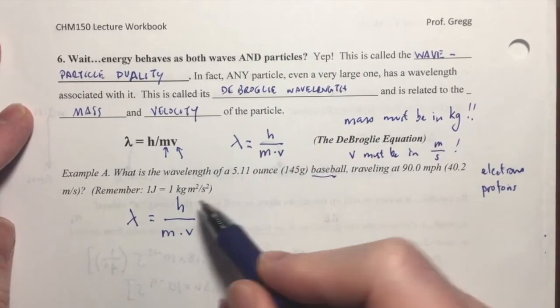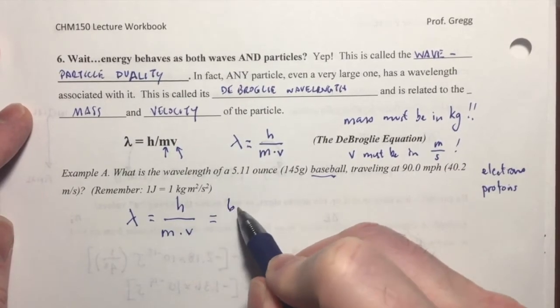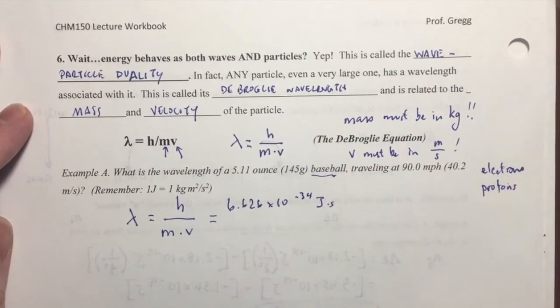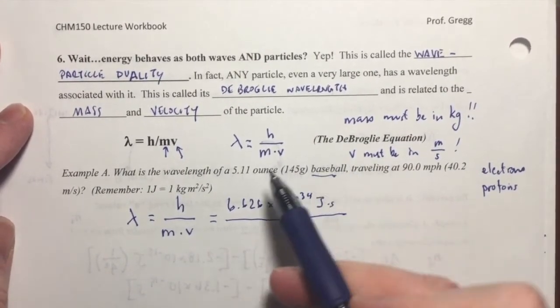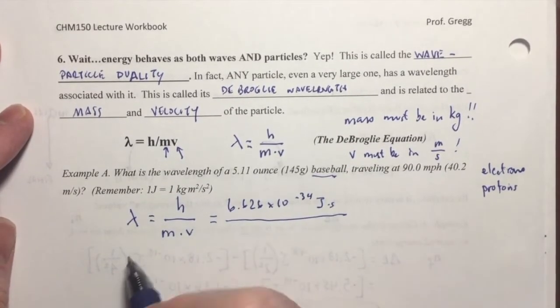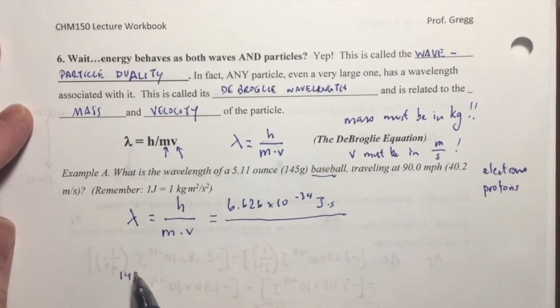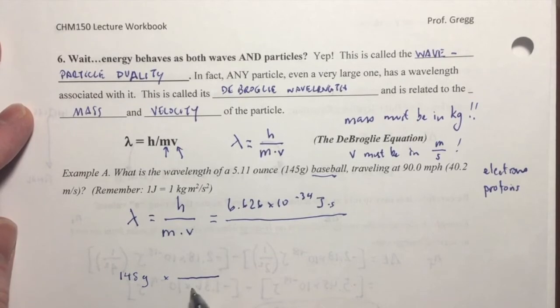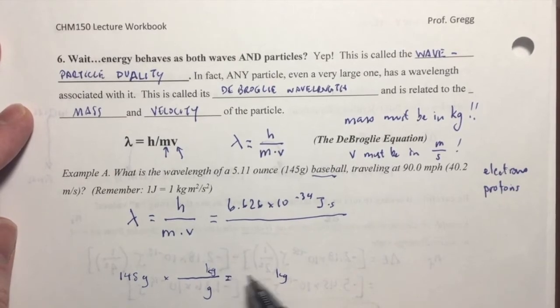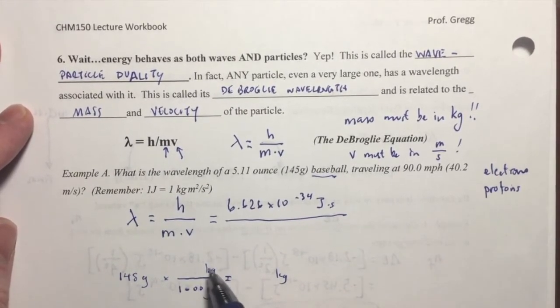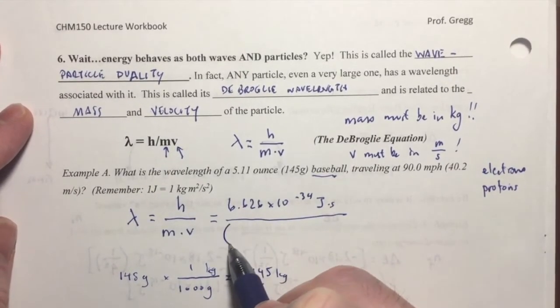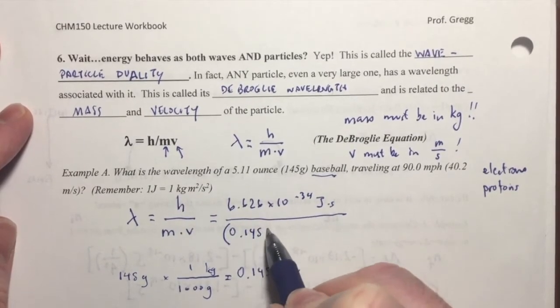So I'm going to start plugging in values. I know what my Planck's constant is, 6.626 times 10 to the negative 34th joule seconds. The mass is 145 grams, but I need it in kilograms. So let's do a quick conversion here. 145 grams, and I have grams to kilograms equals kilograms, right? So I have 1,000 grams and 1 kilogram, and so I have 0.145 kilograms. So now I can plug that in for my mass, 0.145 kilograms.